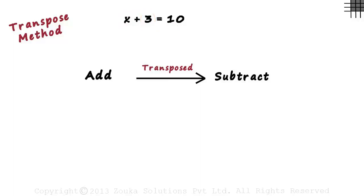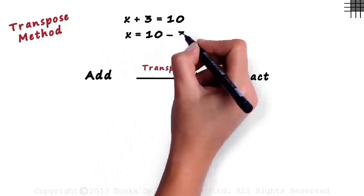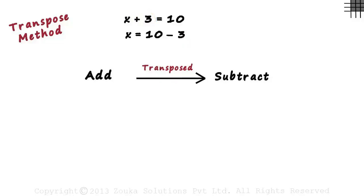We can write the equation as x equals 10 minus 3. So this plus 3, which was on the left hand side, became minus 3 when transposed to the right hand side. Remember, this plus 3 is an existing term — you're not adding or subtracting it. You're just transferring it to the other side by changing its sign.